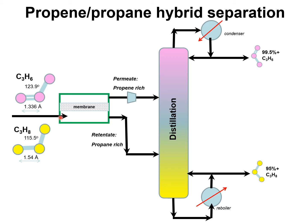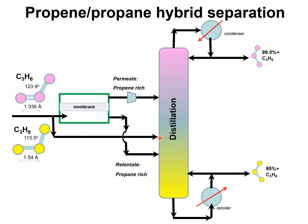In this alternative construct, the feed mixture is separated into a propane-rich permeate, which is fed to the rectifying section, and a propane-rich retentate, which is fed to the stripping section. Modifications of this flow scheme are possible, where part of the feed is fed directly to the distillation column and the other portion passes through the membrane unit. The permeate product is fed to the rectifying section and the retentate is fed to the stripping section.